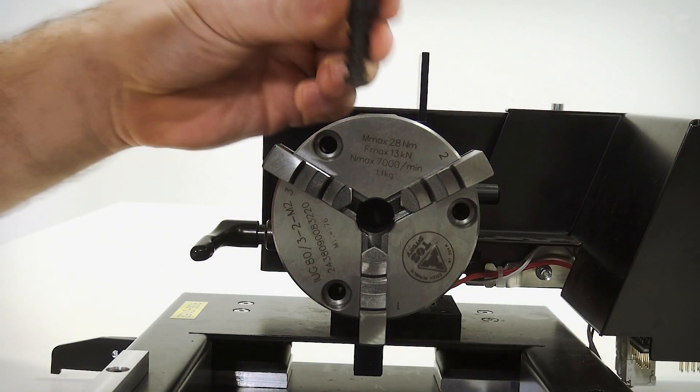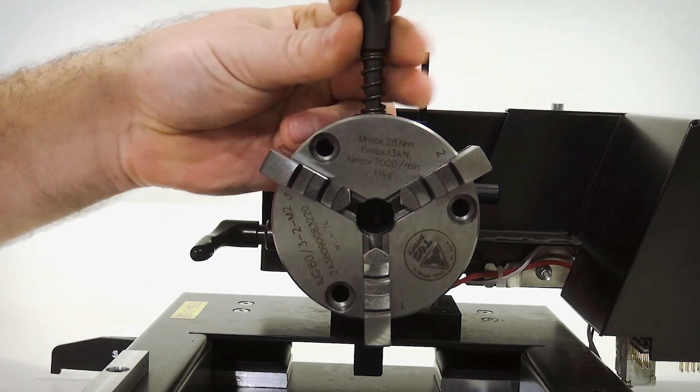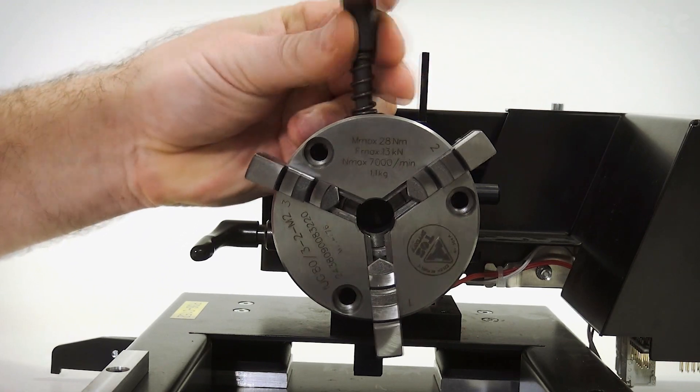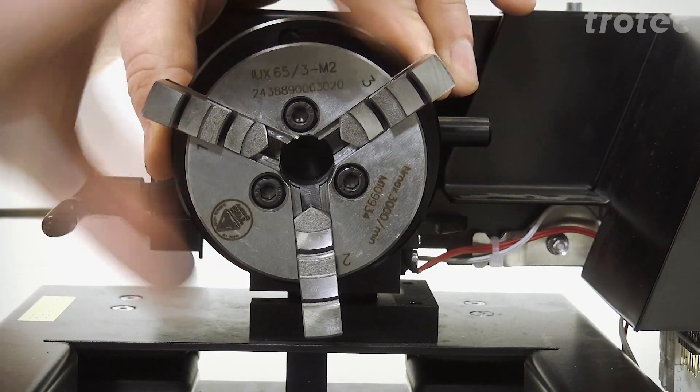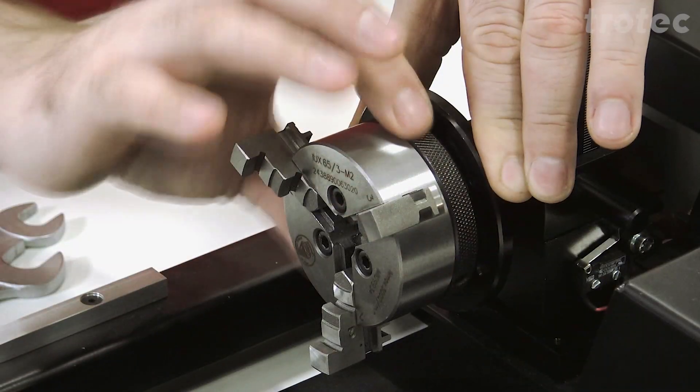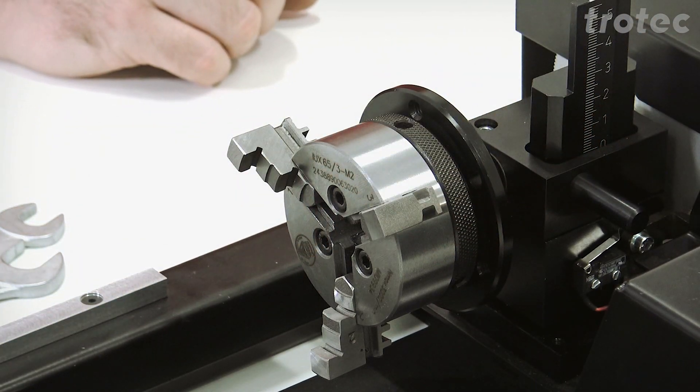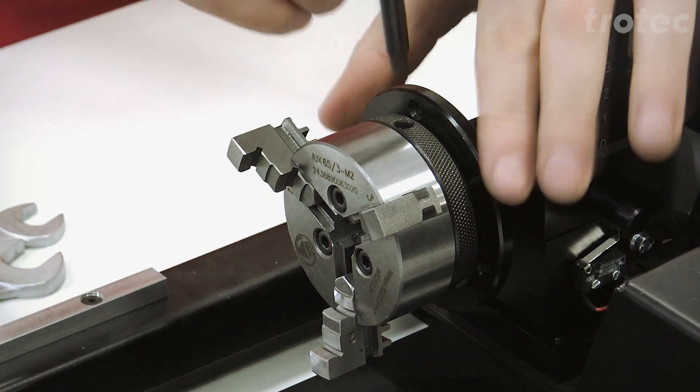To open and close the jaws, you'll need to use a designated Trotec tool. If you're using the manual three jaw chuck, you can close and open the jaw by turning the wheel by hand or use the small lever that comes with it.